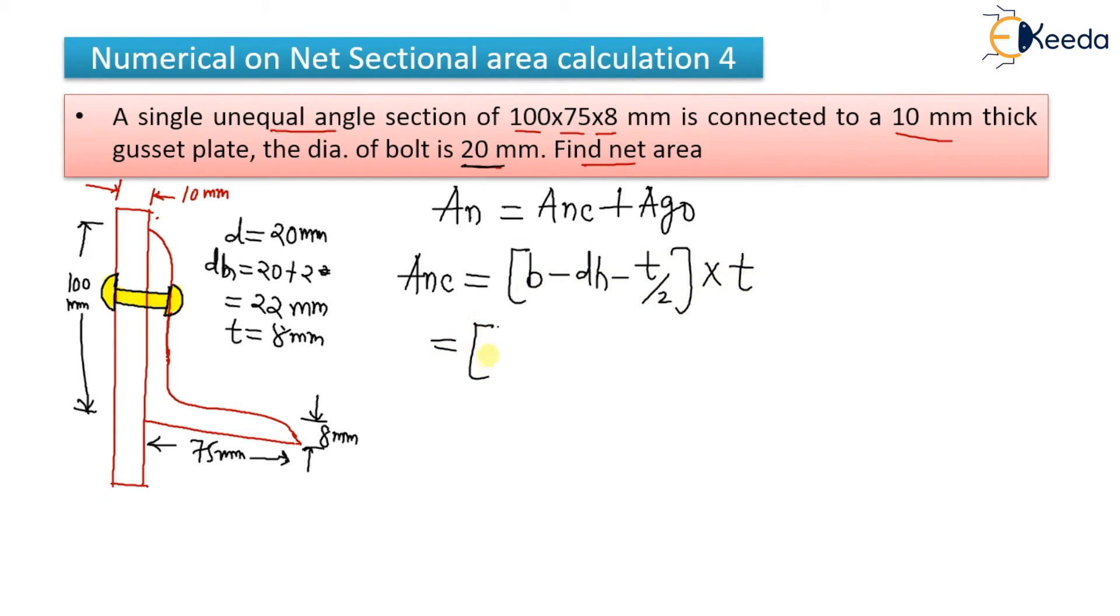So what is B? What is the value of B? It is 100 mm. Because we are seeing the connected leg. Connected leg is having width of 100 mm. DH, it is 22 mm minus thickness by 2, that is 8 by 2. Don't get confused. In exam, in hurry, you will take this thickness. This is the thickness of gusset plate, not the angle. And you have to take the thickness of angle. Multiply by 8. So it will come around 592 mm square. You have to do this on your calculator also.